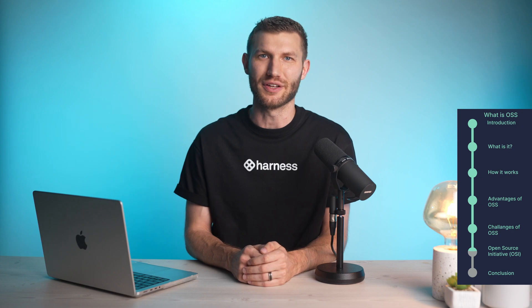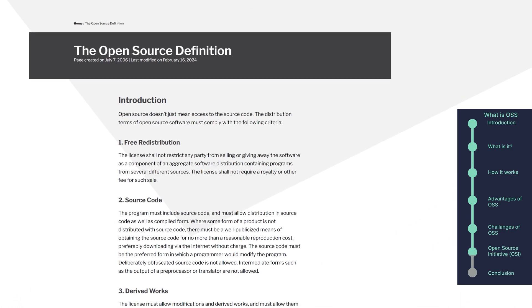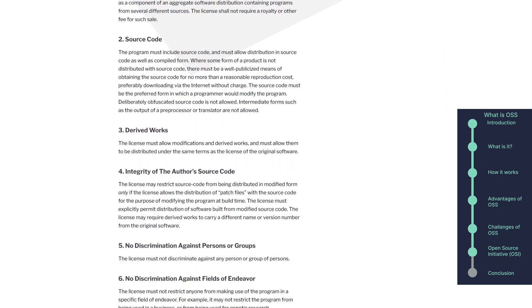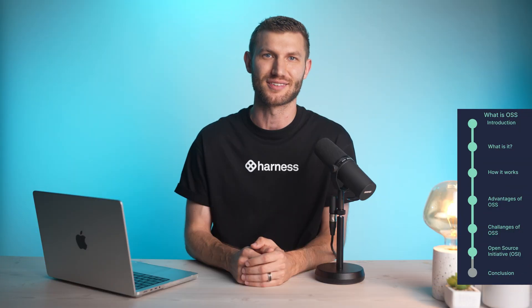The Open Source Initiative, OSI, is a globally recognized non-profit organization promoting and advocating for OSS. Founded in 1998, the OSI plays a pivotal role in defining open-source principles through the open-source definition, ensuring that open-source projects adhere to principles of free distribution, access to source code, derived works, and non-discriminatory licensing. The OSI also maintains a list of open-source licenses and advocates for the adoption of OSS across various sectors.